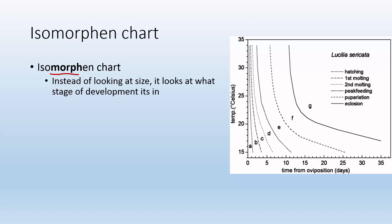So if we're talking about development of flies, we're talking about what stage in its development it's in. So we're looking at a chart that looks a lot the same, but the only difference is instead of saying how big is it, we're saying what form is it in.